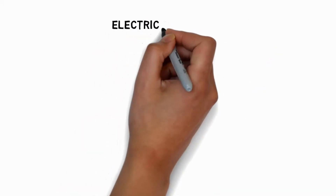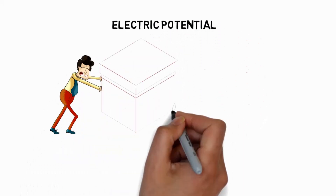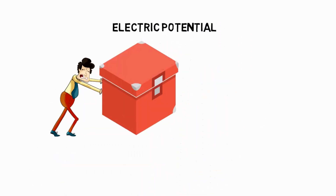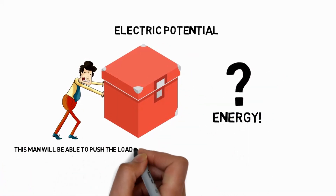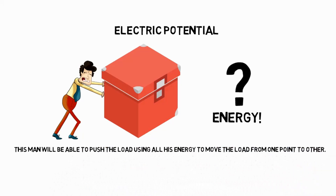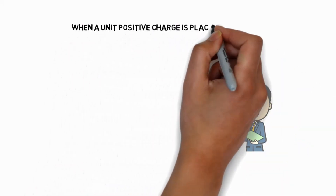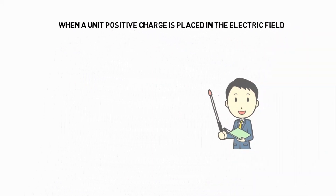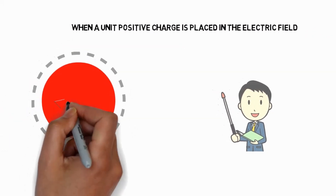Moving on to the next topic: electric potential. The term 'potential' means the ability to do some work. Let us take a scenario — a man is trying to push a load. What does he need? He needs energy. With the help of this energy the man will be able to push the load from one point to another point.